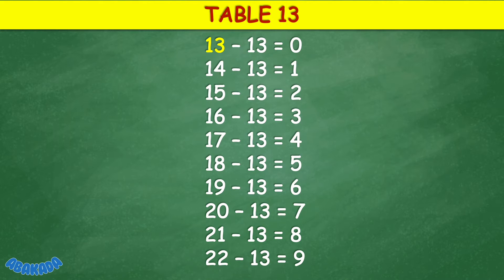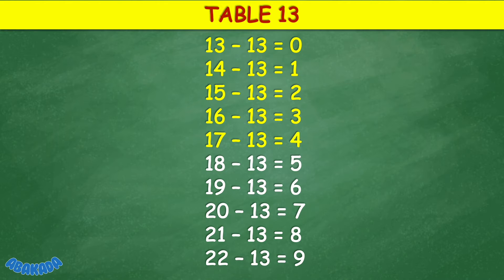Table 13: 13 minus 13 equals 0, 14 minus 13 equals 1, 15 minus 13 equals 2, 17 minus 13 equals 4, 18 minus 13 equals 5, 19 minus 13 equals 6, 20 minus 13 equals 7, 21 minus 13 equals 8, 22 minus 13 equals 9.